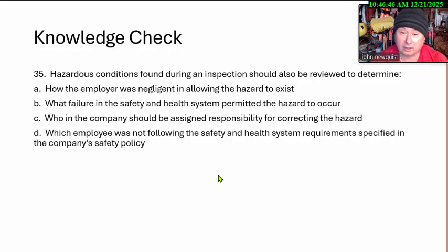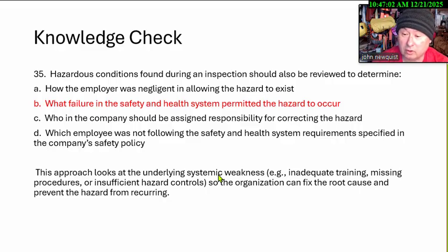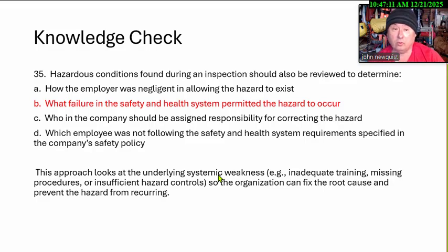We've got only a couple good answers here. We're going to throw out D, and C is not really a good answer. We're looking for B. We look at the underlying weakness in the system — training, missing procedures, hazard controls, audits, etc. — so that the organization can fix the root causes and prevent the hazard from reoccurring.